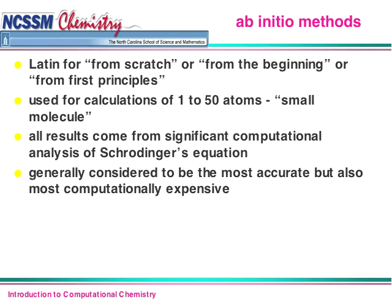Ab initio methods — Latin for from scratch, from the beginning, or from first principles — are used for calculations of one to 50 atoms, what we call a small molecule. We can only use small molecules because every single piece of data has to be calculated from scratch; we're not yet at the stage computationally where we can do large molecules using ab initio methods.